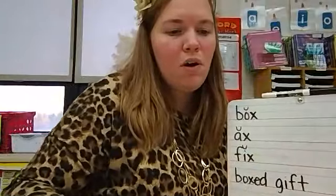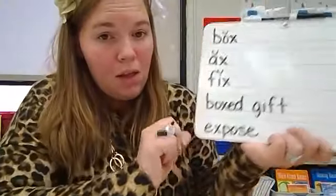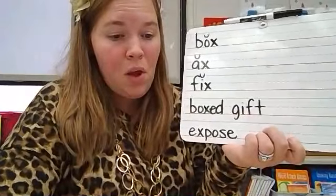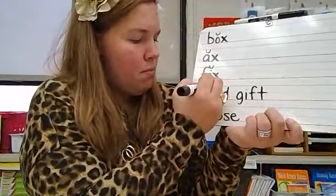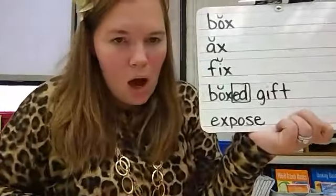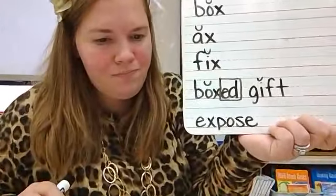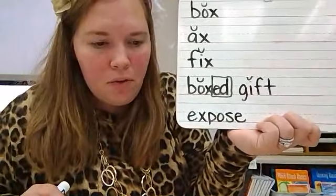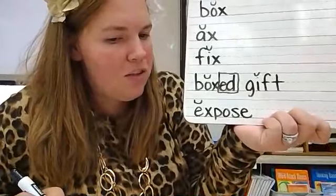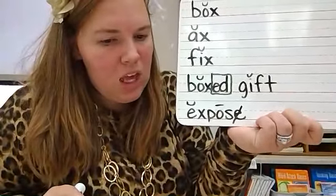Before we practice some new sight words, let's also practice coding some more words. These are going to be like the words on your worksheet today. So let's code boxed gift. Breve above the O, short O, suffix ED — boxed. Gift — breve above the I, short I. Boxed gift. Expose. Breve above the E. Expose — O consonant E, macron above the O, sneaky E. Expose.